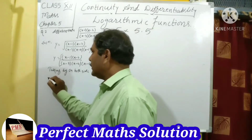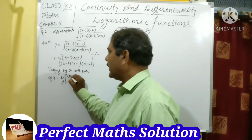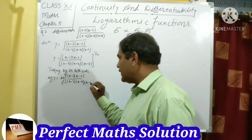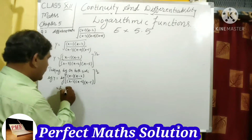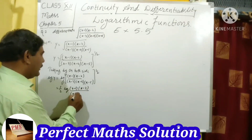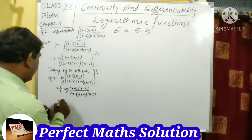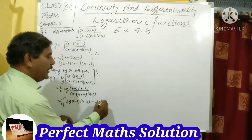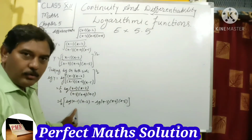Taking log on both sides: log y equals log[(x−1)(x−2) / ((x−3)(x−4)(x−5))]^(1/2). Using the power rule, the 1/2 comes out front: log y equals (1/2)·log[(x−1)(x−2) / ((x−3)(x−4)(x−5))]. Now applying the quotient rule: (1/2)·[log(x−1)(x−2) − log(x−3)(x−4)(x−5)].